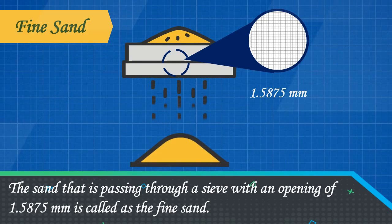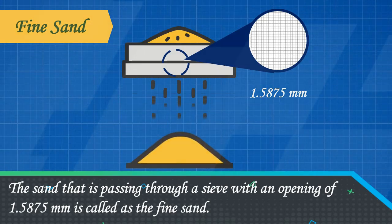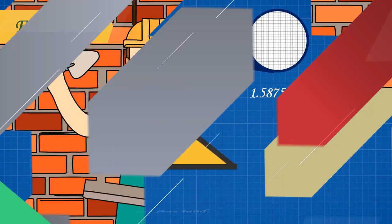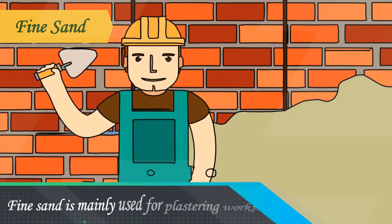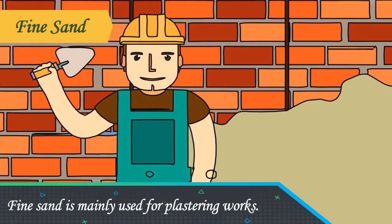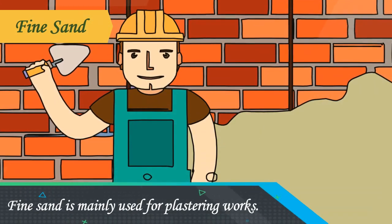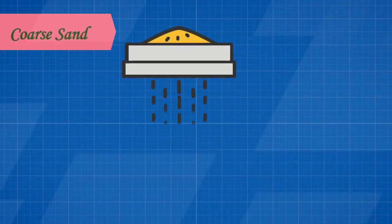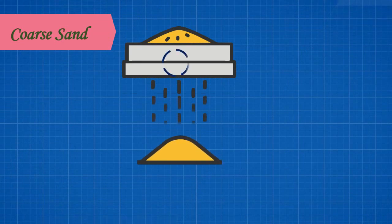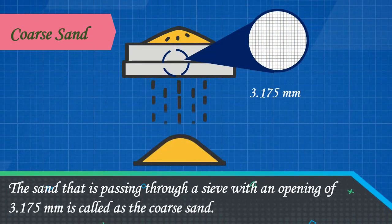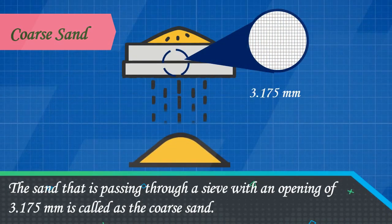Fine sand is the sand that passes through a sieve with an opening of 1.5875 millimeters. Fine sand is mainly used for plastering works. Coarse sand is the sand that passes through a sieve with an opening of 3.175 millimeters.